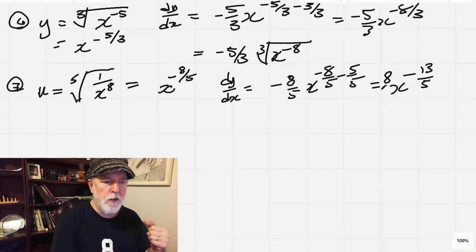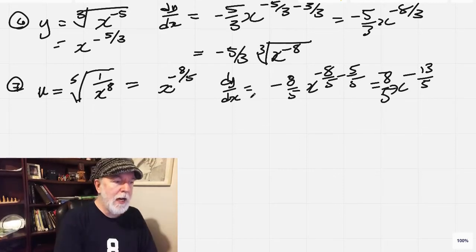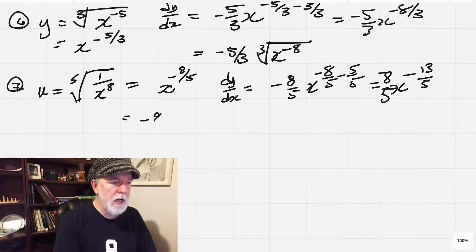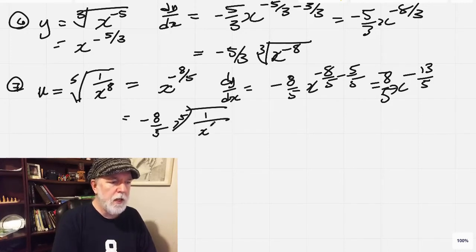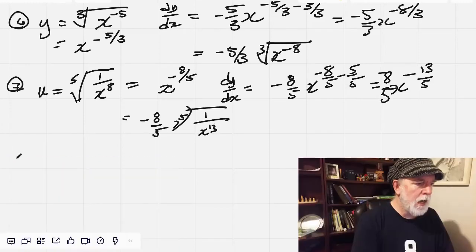Don't forget the 8 fifths here, the negative 8 fifths. And then we'll finally set it the way it was when we got it. Negative 8 fifths, fifth root of 1 over x to the 13th. And now number 8,